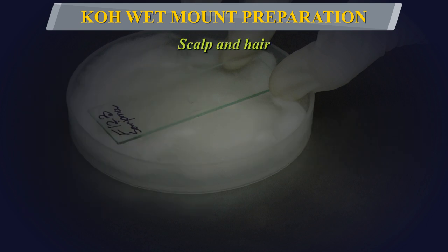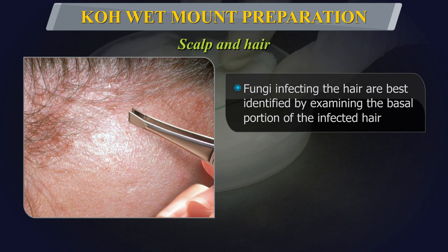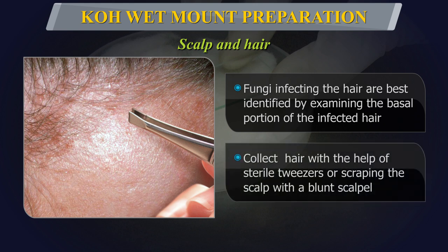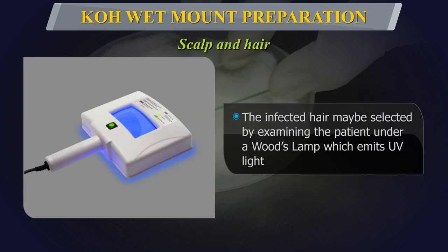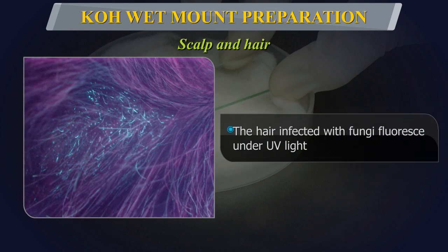Scalp and Hair: Fungi infecting the hair are best identified by examining the basal portion of the infected hair. Collect by removing dull broken hair from the margin of the lesion with the help of sterile tweezers or scraping the scalp with a blunt scalpel. The infected hair may be selected by examining the patient under a Wood's lamp which emits ultraviolet light. The fluorescent distorted hair should be plucked and examined.